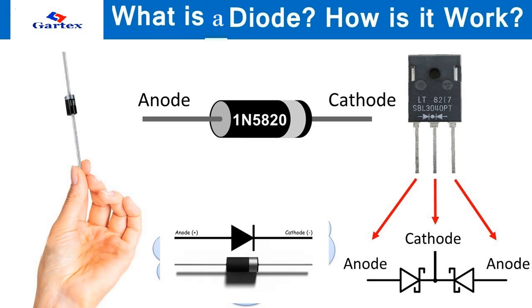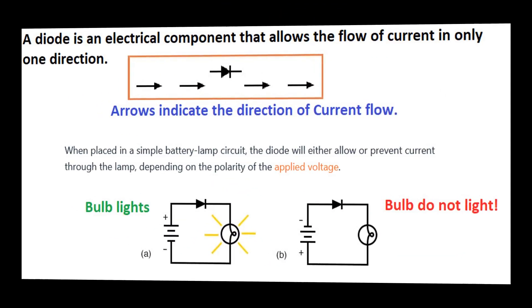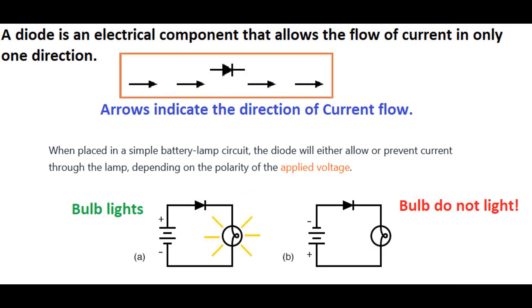Welcome to our tutorials today about diodes. What do you think a diode is, and how does it work? A diode is an electrical component that allows current to flow in only one direction. The arrows indicate the direction of flow of current here.